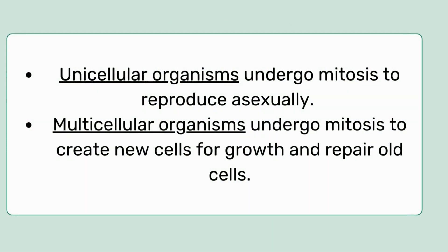It has two types: unicellular organisms and multicellular organisms. Unicellular organisms undergo mitosis to reproduce. Multicellular organisms undergo mitosis to create new cells for growth and to repair old cells.